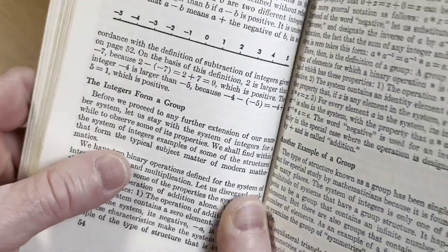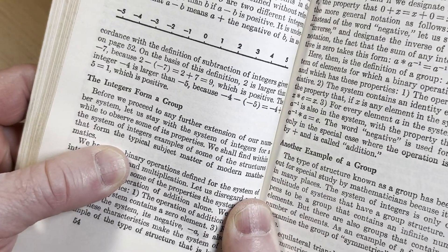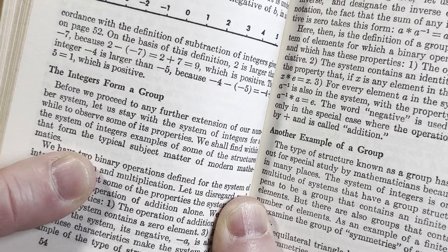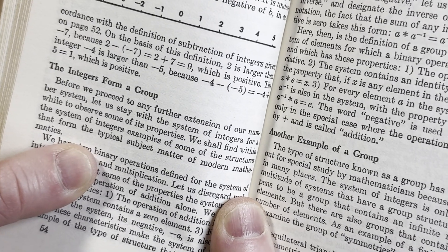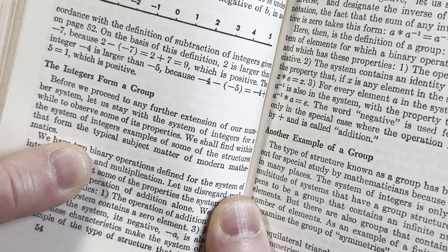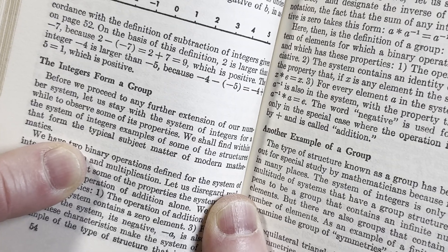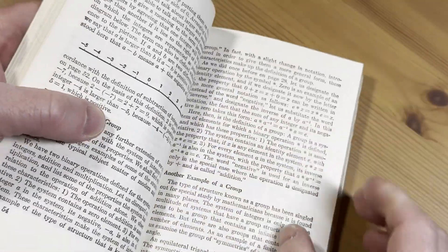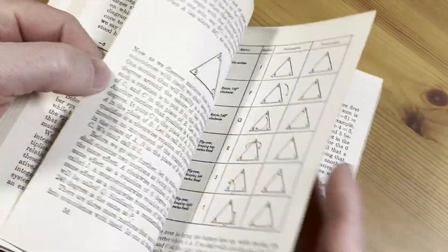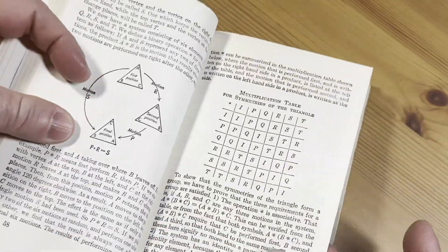Look at this. The integers form a group. Before we proceed to any further extension of our number system, let us stay with the system of integers for a while to absorb some of its properties. We shall find within the system of integers examples of some of the structures that form the typical subject matter of modern mathematics. It has examples of groups. And it has exercises. Let me show you. There's actual exercises in this book.